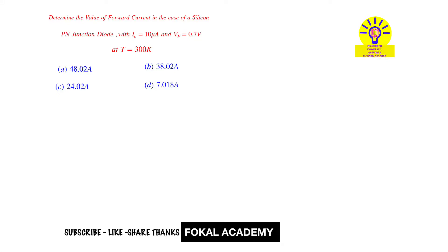Hi to everyone, welcome to Focal Academy. In this problem, determine the value of forward current in the case of a silicon PN junction diode with reverse saturation current given as 10 microamperes and forward voltage given as 0.7 volts at temperature 300 Kelvin.